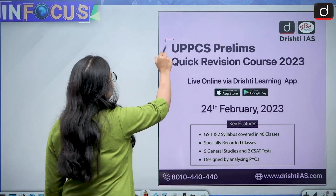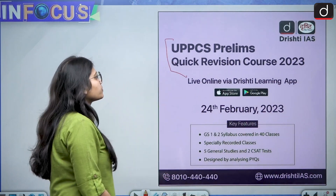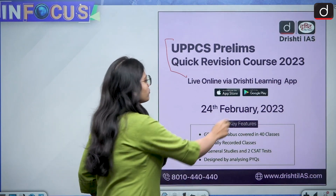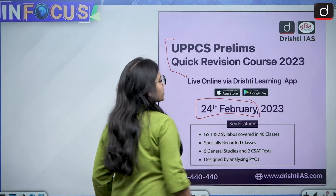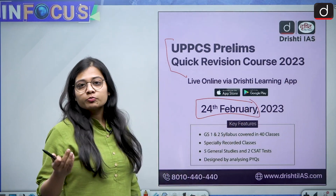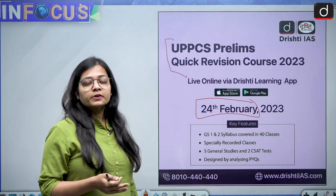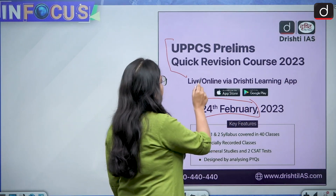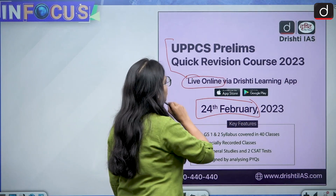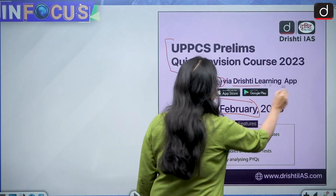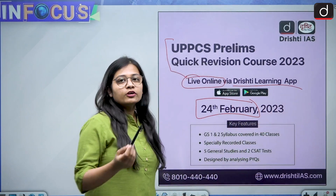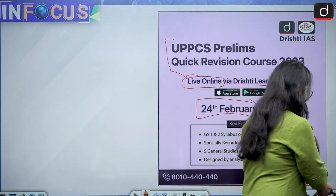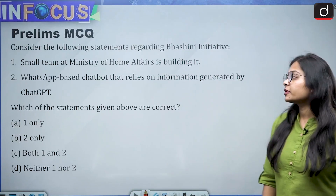Before moving to the prelims MCQ, you should know that Drishti IAS is launching the UPPCS Prelims Quick Revision Course for 2023, starting from 24th February. Anyone preparing for the UPPSC exam can enroll, and this will be done via online live courses on the Drishti Learning App.